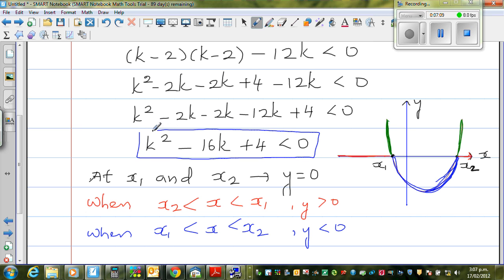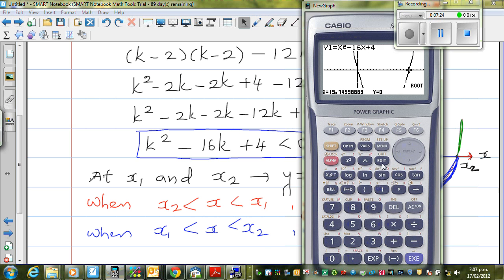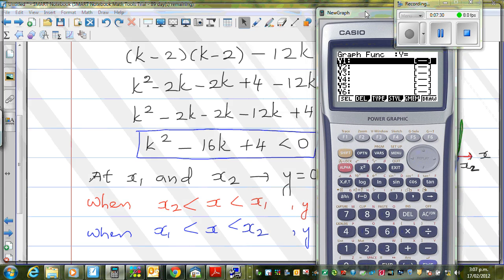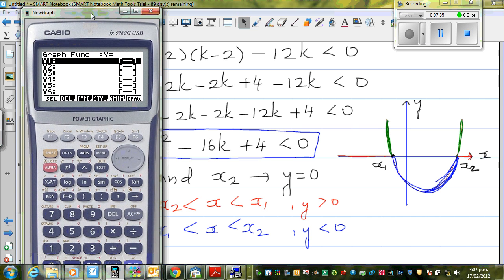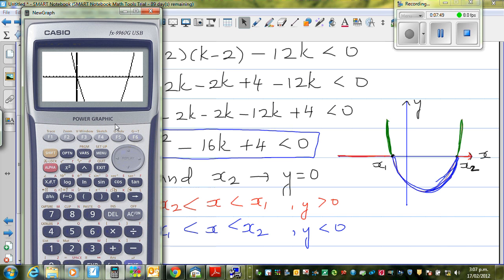Now thinking graphically, I'm going to use a graphic calculator. I want to find for this quadratic equation which are these two values x1 and x2. Let me graph that first. In place of k, I can put x. So x² minus 16x plus 4 equals... and then draw it. So this is a parabola.